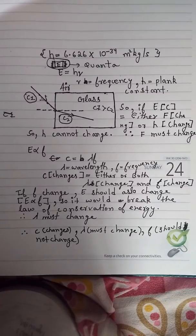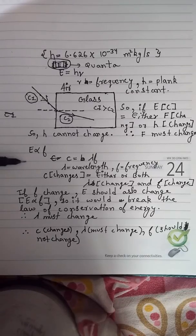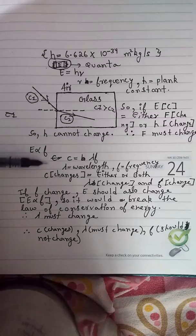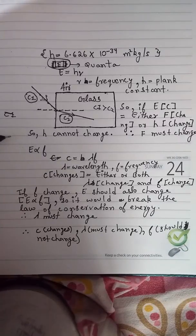We all know that there is an equation: C is equal to lambda F, where C is equal to speed of light, lambda is equal to wavelength, and F is equal to frequency.